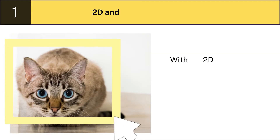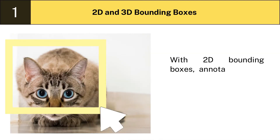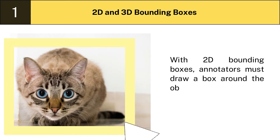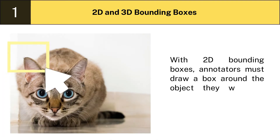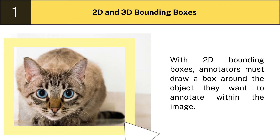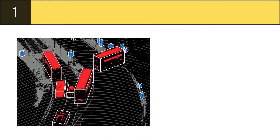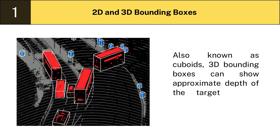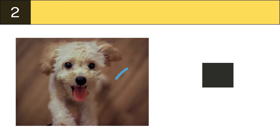One: 2D and 3D bounding boxes. With 2D bounding boxes, annotators must draw a box around the object they want to annotate within the image. Also known as cuboids, 3D bounding boxes are almost the same as 2D bounding boxes, except they can also show the approximate depth of the target objects being annotated.